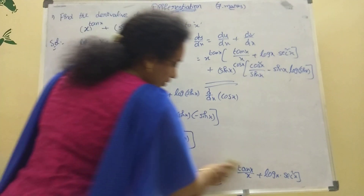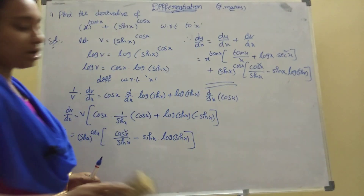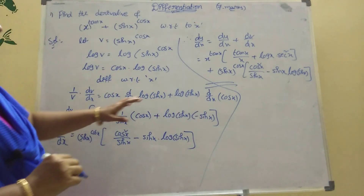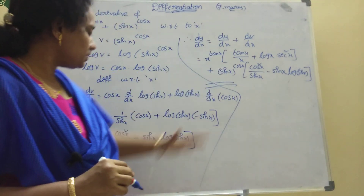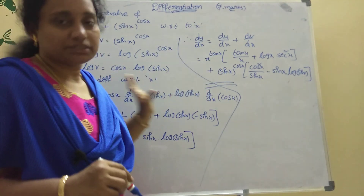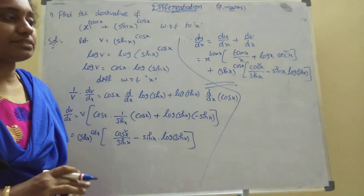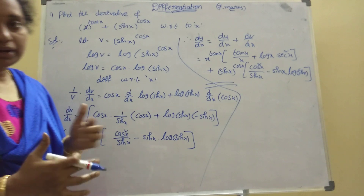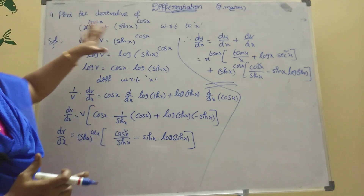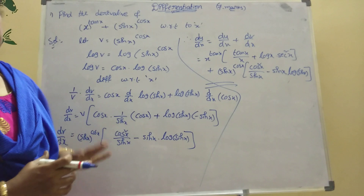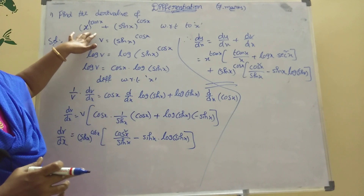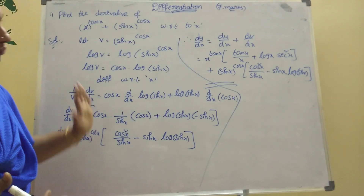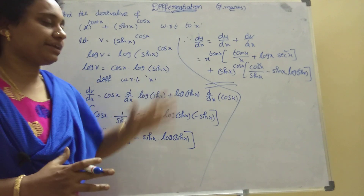Got it? See, this is a very important model. Suppose any two functions like x power tan x, x power sec x — whatever it may be — if two functions are there with that model, you do the same procedure. Take y equal to u plus v. Do the derivative of u separately and v separately. Then combine both answers — you will get the final answer.